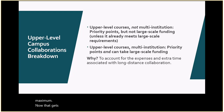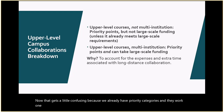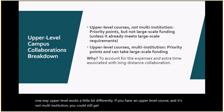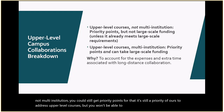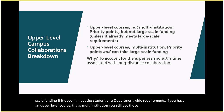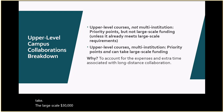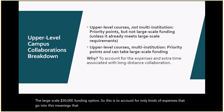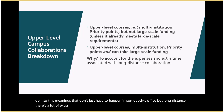Upper level works a little differently from other priority categories. If you have an upper-level course that is not multi-institution, you can still get priority points. But you won't be able to jump to large-scale funding unless it meets the student or department-wide requirements. If you have an upper-level course that is multi-institution, you get priority points and can take the large-scale $30,000 funding option. This accounts for the extra expenses of multi-institution collaboration — meetings across distances, extra coordination, etc.